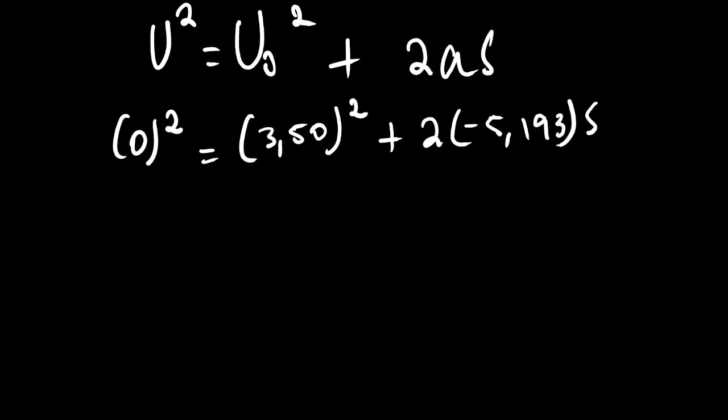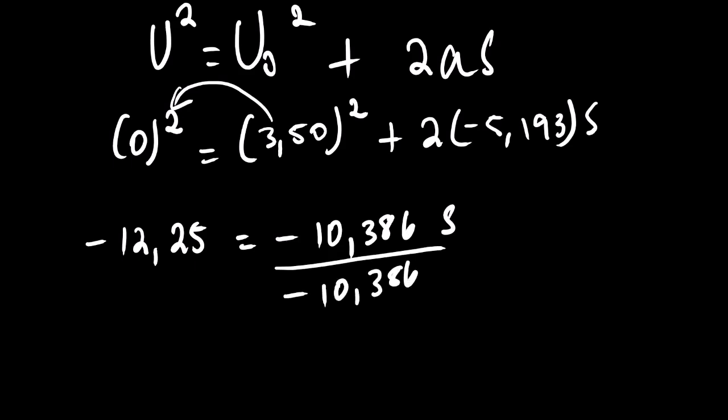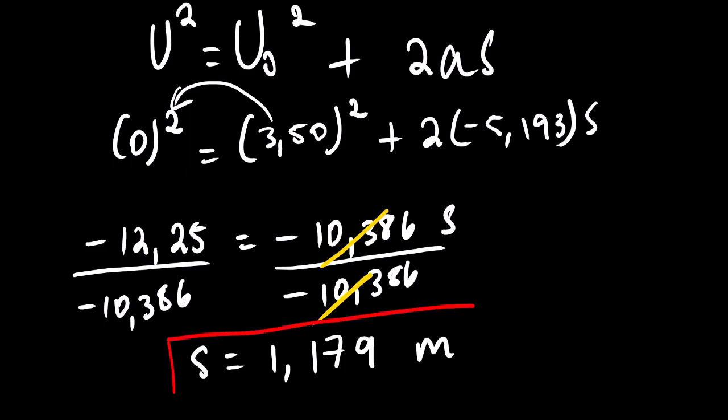3.50 squared is equals to 12.25. And then when we transpose 12.25, we have negative 12.25 equals to negative 5.193 multiplied by 2, it's negative 10.386 S. Divide both sides by 10.386. This will result into 1, 1 multiplied by S. We get our displacement 1.179 meters. So this is the actual answer to the first question.